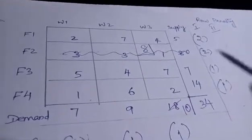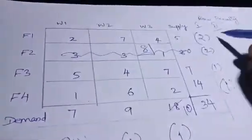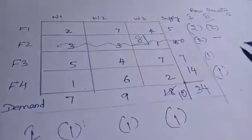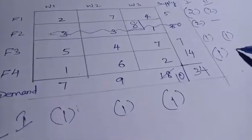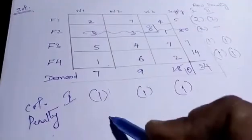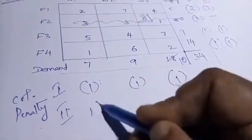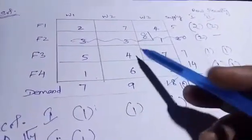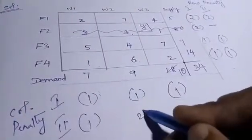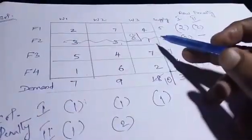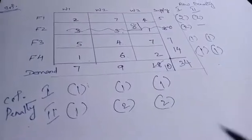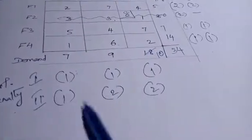For the second iteration, we recalculate penalties. Row penalty for row 1: values 2, 7, 4 gives penalty 2. Other row and column penalties are recalculated. Column 3: 4 minus 2 equals 2. We get values 1, 2, 2 for columns and 2, 1, 1 for rows. The maximum penalty is 2.